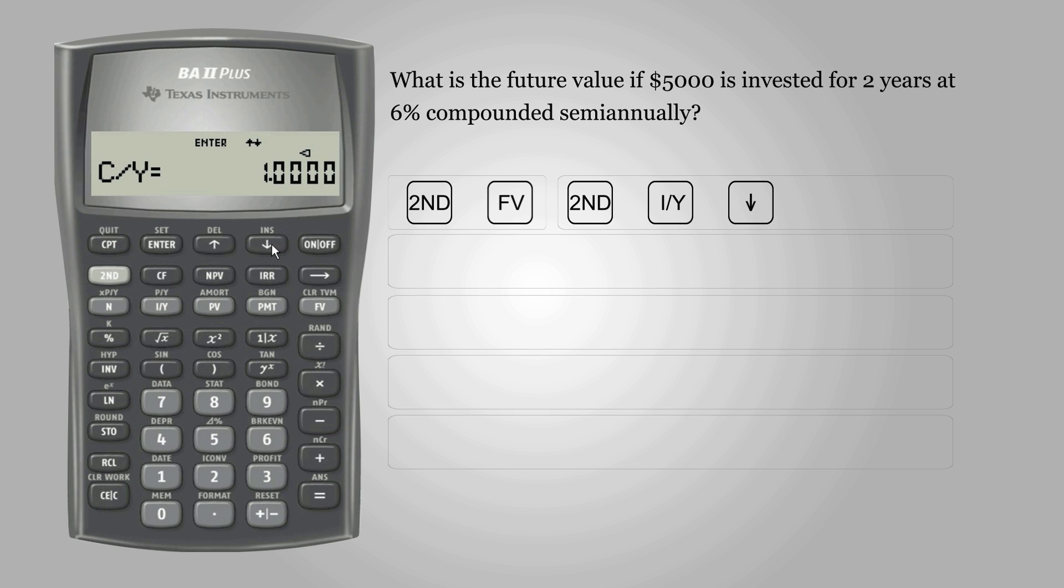Since the question asks for semi-annual periods, the CY is 2. Press Enter. Press C and C again to exit.